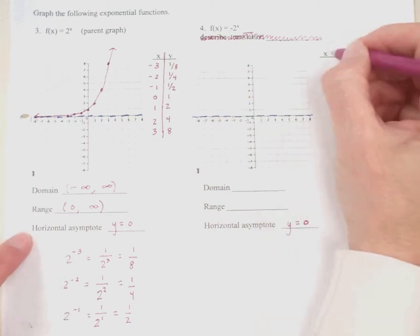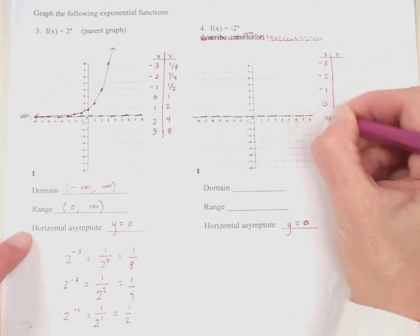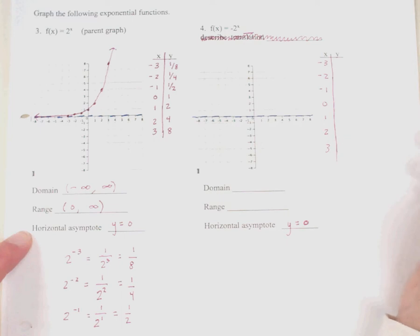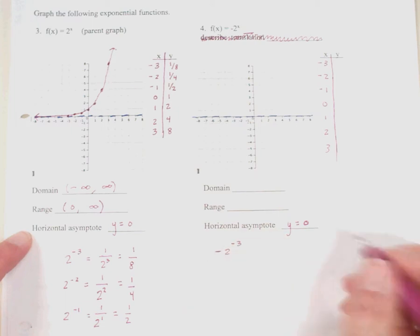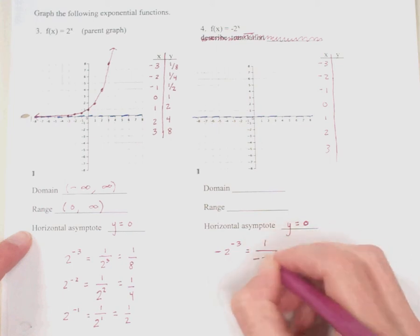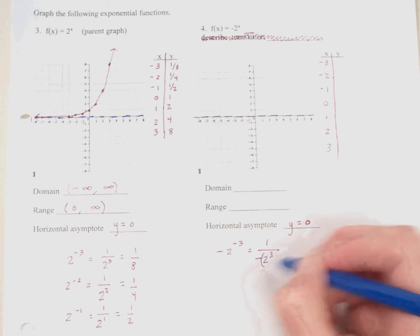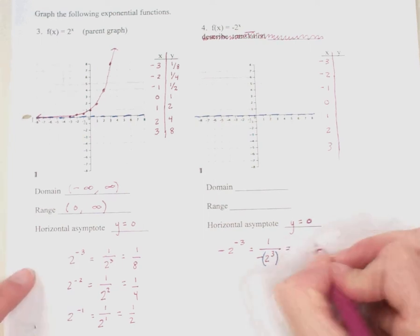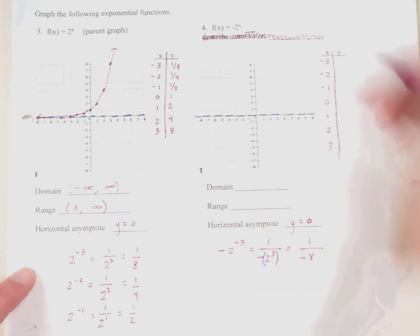I'll plug in values for x — negative 3, negative 2, negative 1, 0, 1, 2, and 3 — for the function negative 2 to the x power. For x = negative 3: I have negative 2 to the negative third power, which becomes 1 divided by negative 2 to the third power. Since negative 2 is not in parentheses, I calculate 2 to the third power first to get 8, then apply the negative, giving negative 1/8.